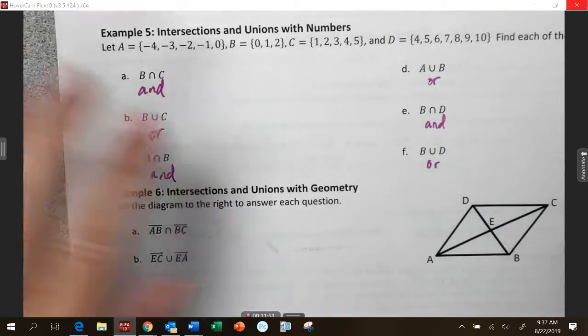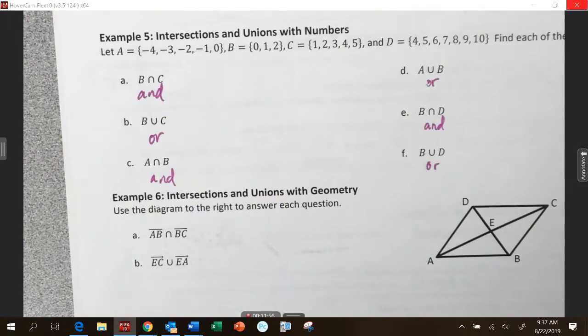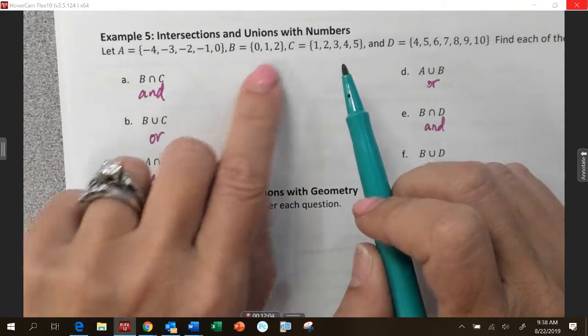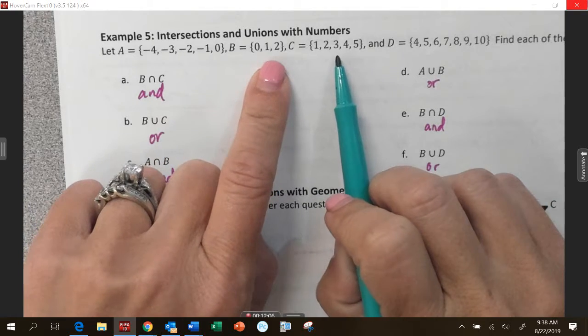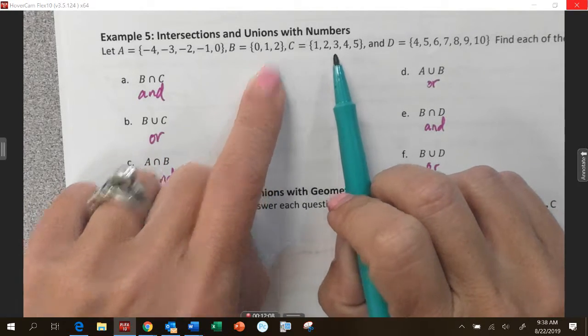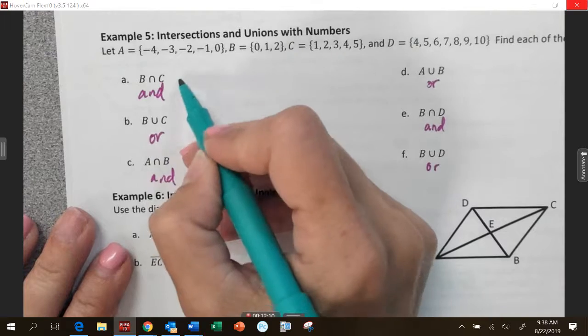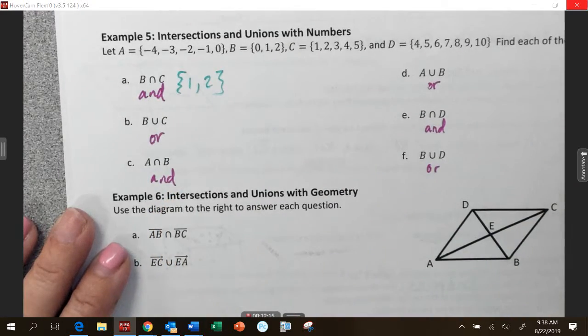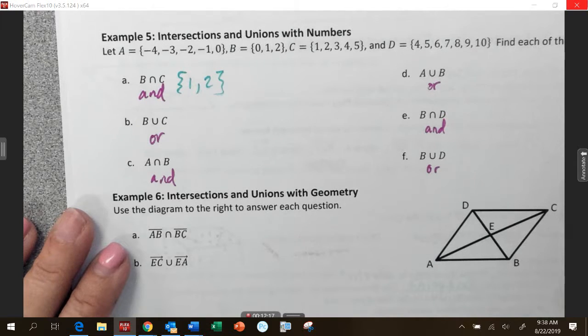Now, we're going to look at the sets. So, these are sets. Sets are showed with the fancy brackets. That's a set of numbers. We're going to look at set B and set C. And we're trying to find out what is in both because it says and. So, look at B and C. What numbers are in both? One and two. One and two. You put them in numerical order with fancy brackets. One, two. Done. That's it. That's what's in both.